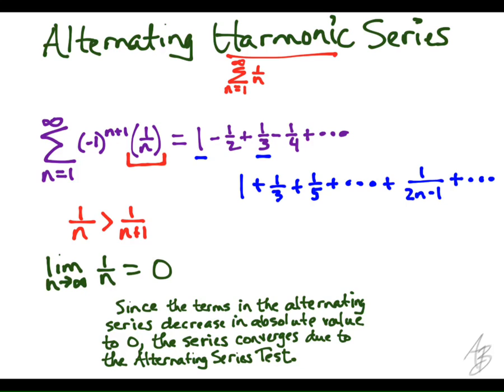Likewise, if we just take all the negative terms, the negative 1 half minus 1 fourth minus 1 sixth and so on, the general term here is minus 1 over 2n. Again, this behaves like the harmonic series, except it's just half of the harmonic series. It's going to be negative infinity, it's also going to diverge. So if we just take the positive terms or just the negative terms in this series, both of those series diverge.